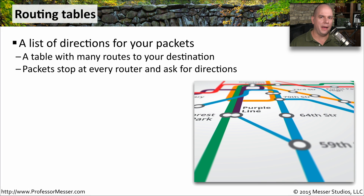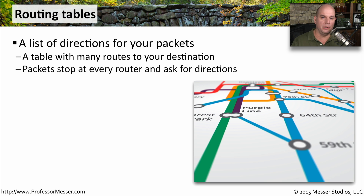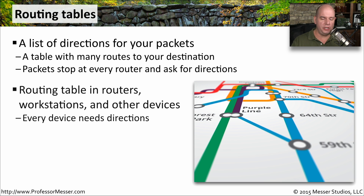As an end user, we rarely think about the routes our traffic is taking when communicating out to the internet, but it is a relatively complex path, and devices along the way have to make decisions about where traffic is going. That's why all of these devices have a routing table — it's a big list of directions, just like a map, showing how to get from point A to point B. Every time a packet hits a new stop, it asks for directions, and we can look inside every router along the way to list out exactly what the route looks like.